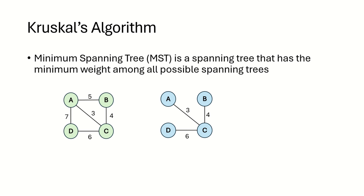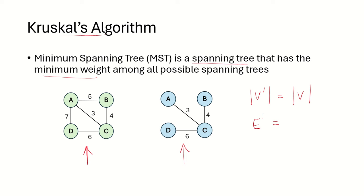In this video we are going to take a look at Kruskal's algorithm, which is used to find the minimum spanning tree for a graph. The minimum spanning tree is the spanning tree which has the minimum weight among all possible spanning trees. The number of vertices in the MST will be equal to the vertices of the graph, and the number of edges will be equal to the number of vertices minus 1.